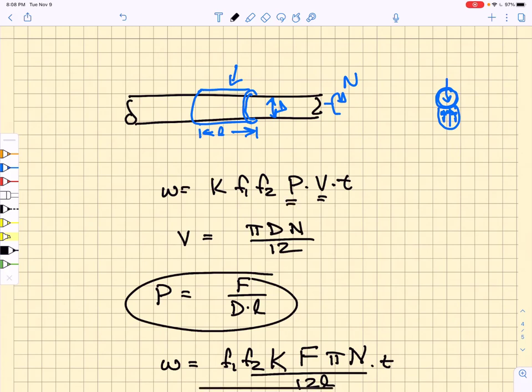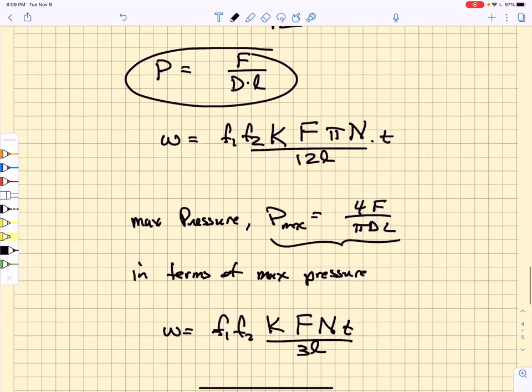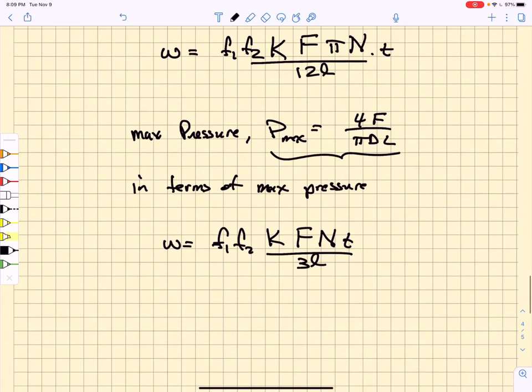But if it starts to run ahead in one area, then the pressure will increase in other areas, and so you get this oscillating sort of change in pressure which makes the wear rate more uniform. But nonetheless, we want to express the wear in terms of the maximum pressure of the distribution.